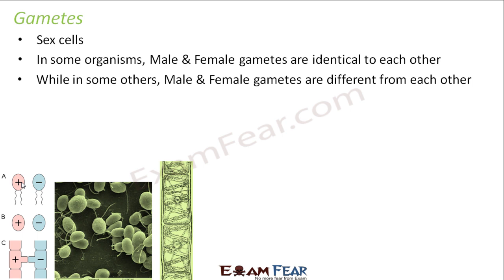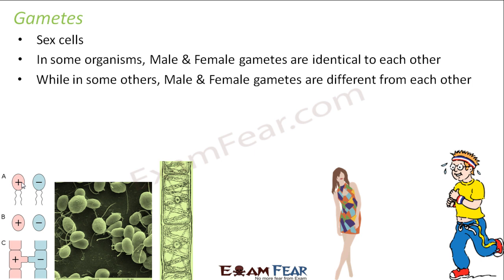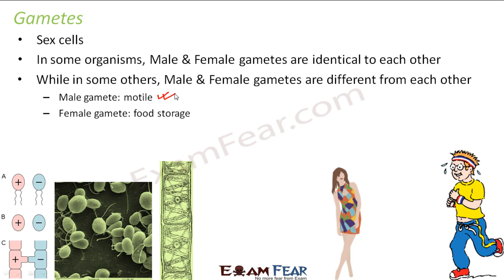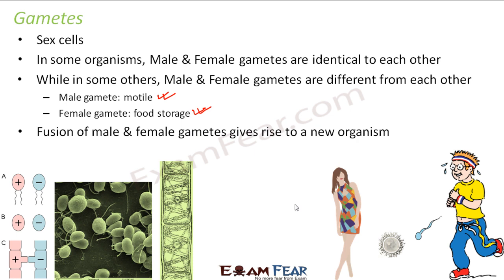In most advanced organisms where sexual reproduction takes place, the male and female gametes are different from each other - they have different appearance, structure, and function, so we can easily distinguish them as male and female. The best example is human beings. In humans, the male gamete is motile - it is capable of moving. The female gamete's main function is food storage. Inside a woman there is a sex cell capable of reproduction, and its main function is storage of food.